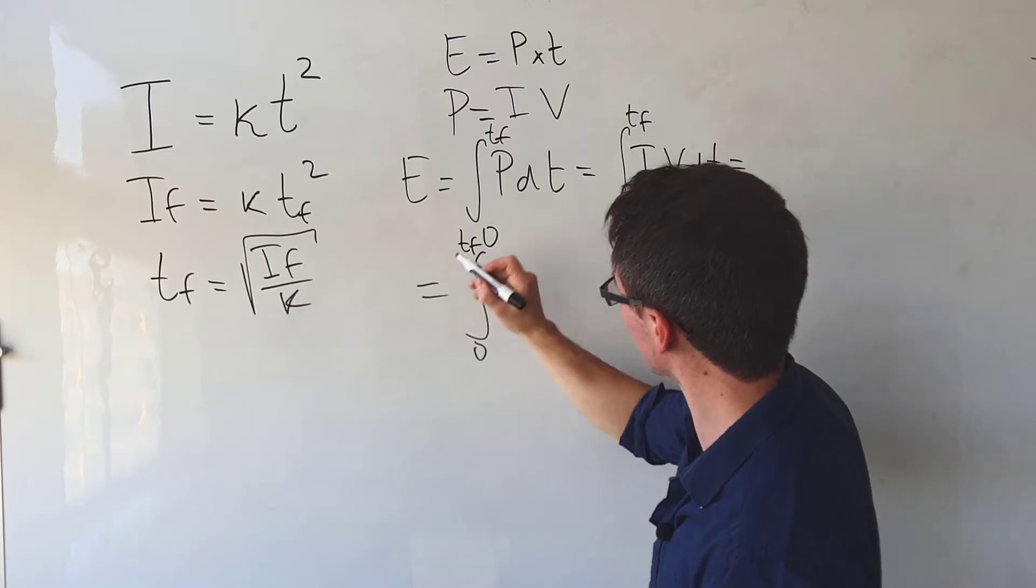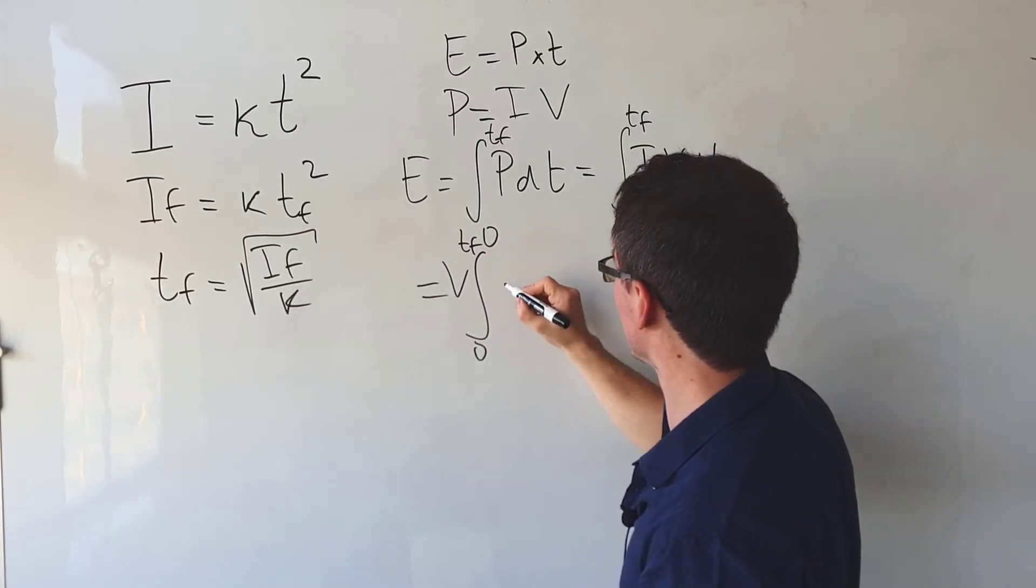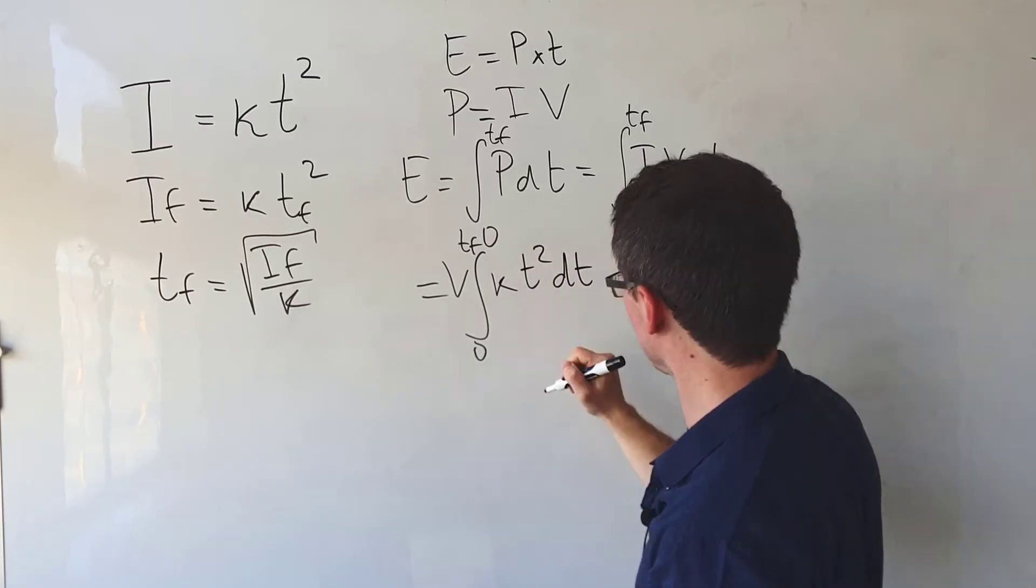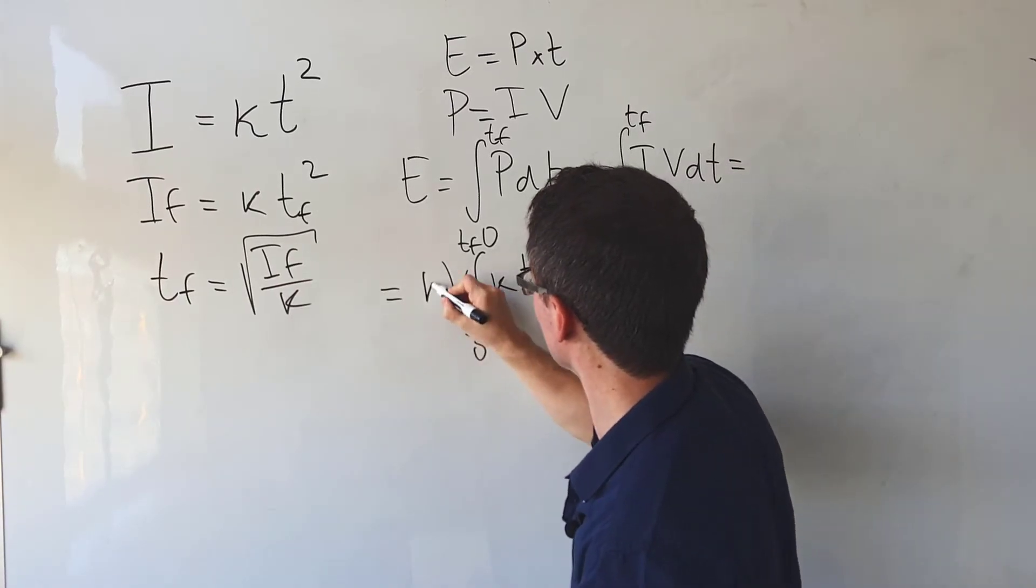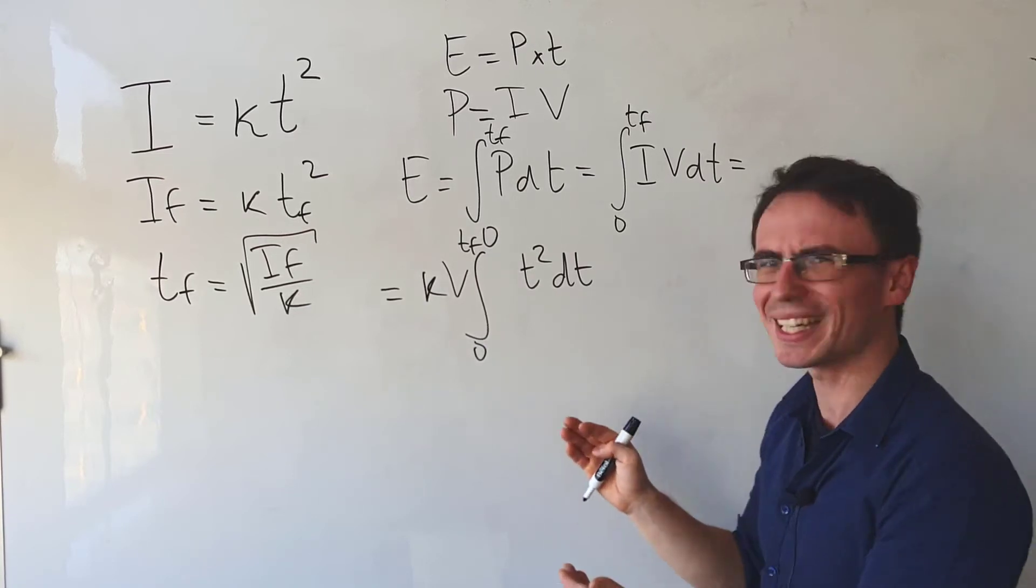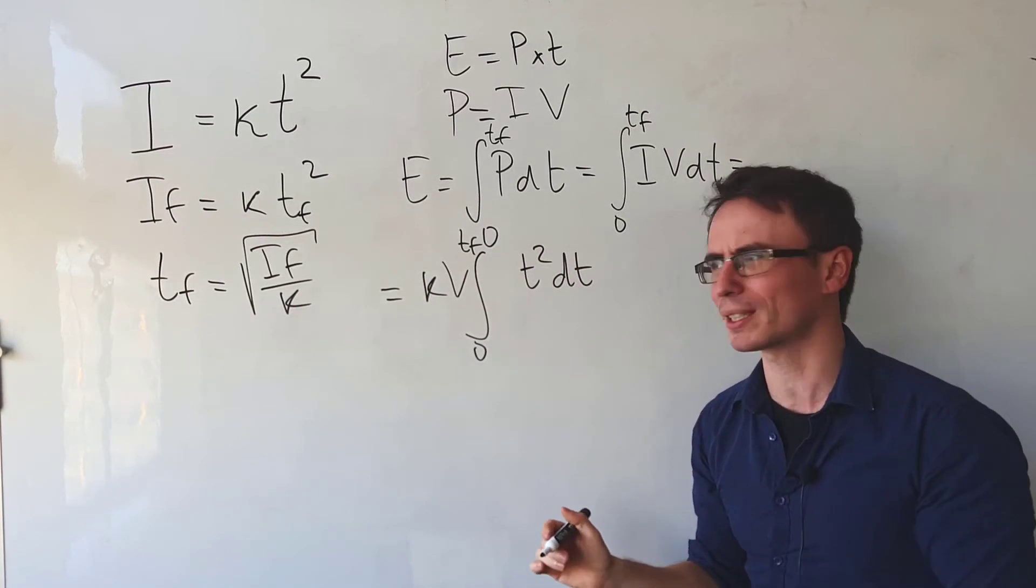Now v is a constant so let's take that outside of the integral sign. i is just equal to k t squared dt. k is also a constant so we can take that outside of the integral sign as well and all we're left with is the integral from zero to tf of t squared with respect to t.